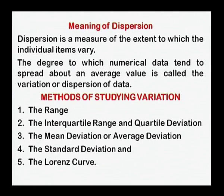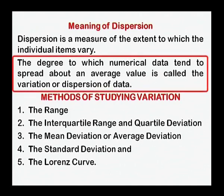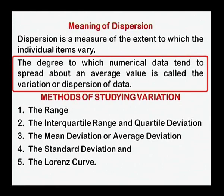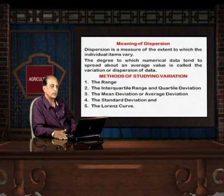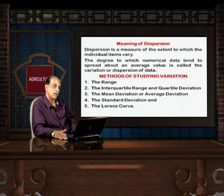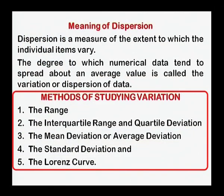Now, first of all, we should know what is the meaning of dispersion. Dispersion is a measure of the extent to which individual items vary. Dispersion refers to the variations in the values given in the table. The degree to which numerical data tend to spread out around an average value is called the variation and dispersion of data. Now we discuss the methods used for calculating the measure of dispersions: the first is the range, the second is interquartile range and quartile deviations, the third is mean deviations and average deviations, the fourth is standard deviations, and finally the Lorenz curve.